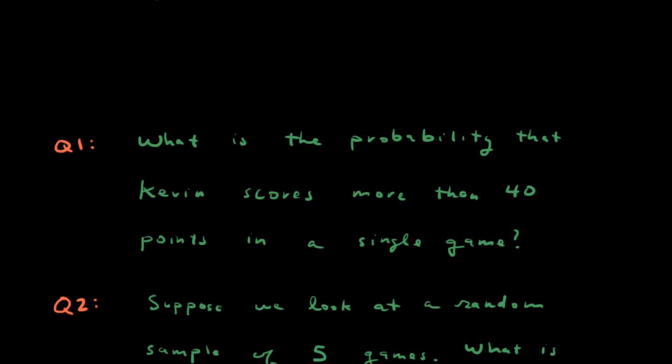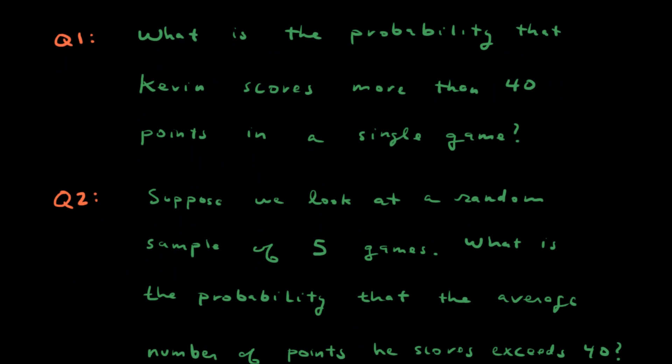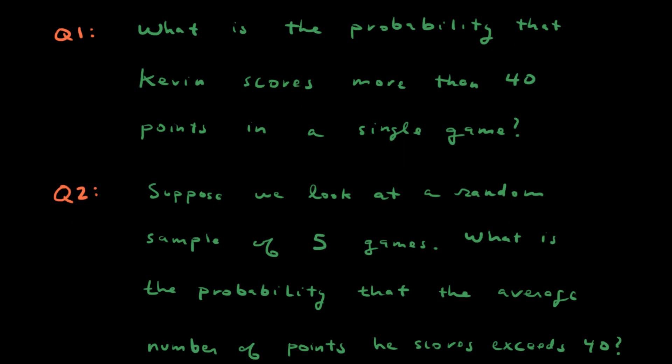Two questions we could ask. One, what is the probability that Kevin scores more than 40 points in a single game? And in question two, suppose we look at a random sample of five games. What is the probability that the average number of points he scores exceeds 40?